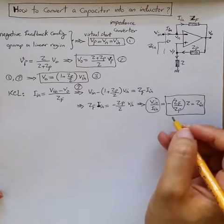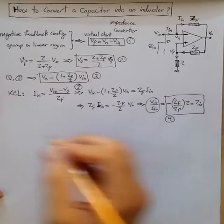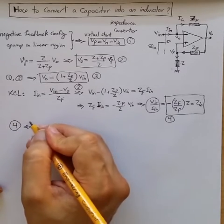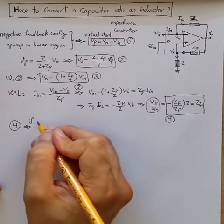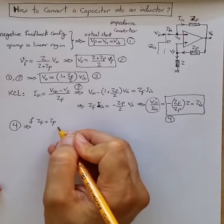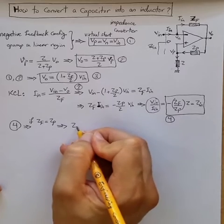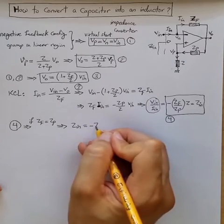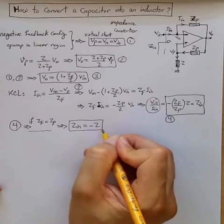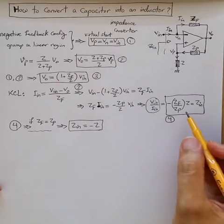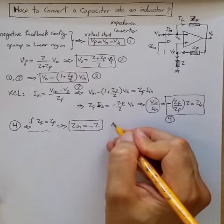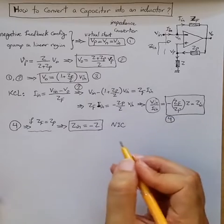Now the interesting things that can be realized from 4. If, let's say, impedance ZF equal to ZP, then ZN is equal to minus Z. So we effectively made a negative impedance converter or NIC circuit.